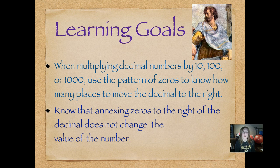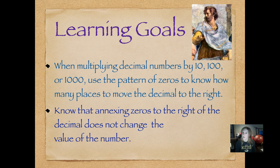Here are our individual lesson learning goals. When multiplying decimal numbers by 10, 100, or 1,000, use the pattern of zeros to know how many places to move the decimal to the right. Our second goal is to know that annexing zeros to the right of the decimal does not change the value of the number.